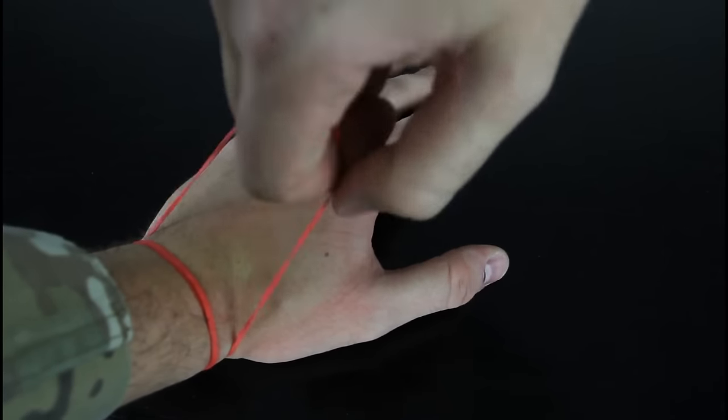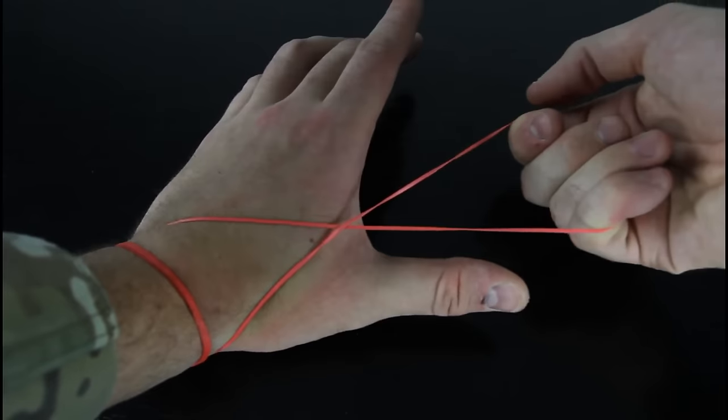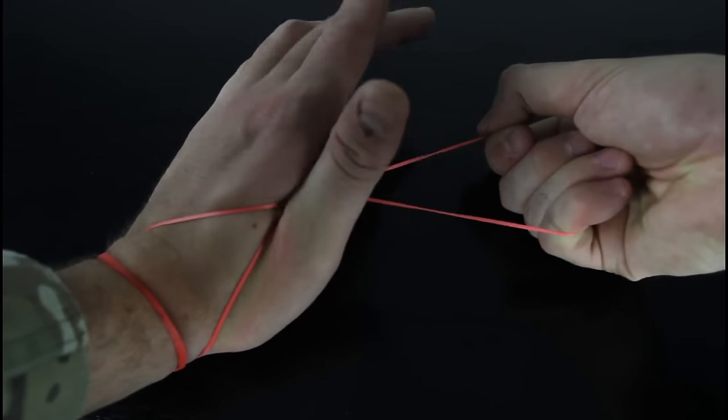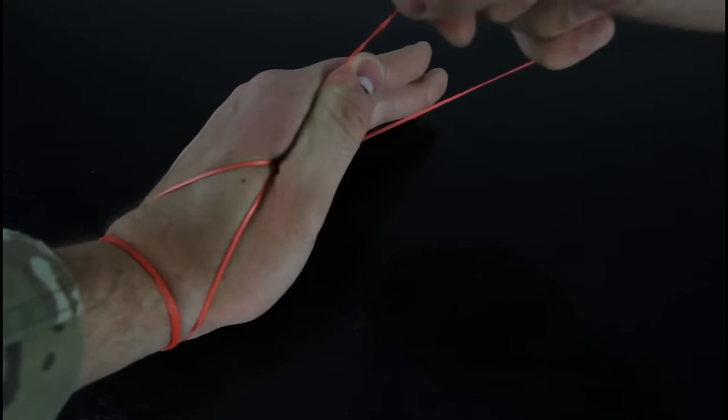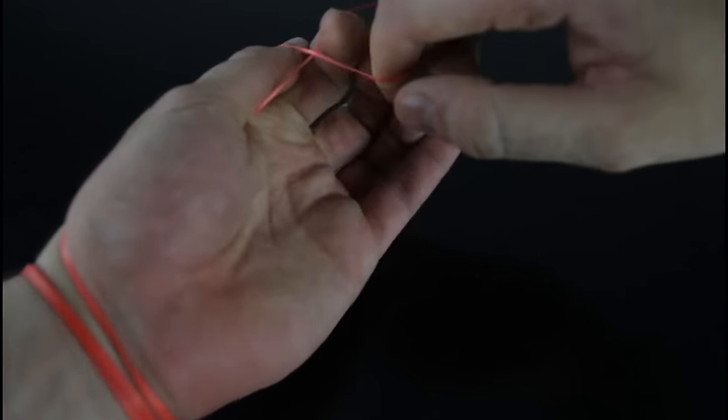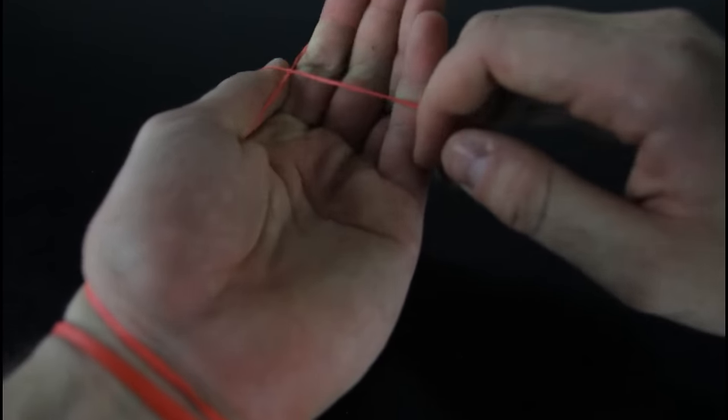You grab your rubber band right here, twist it one time. You see my hand is upside down now. Lock it here, go over your finger, and you see how I twist it again. Put my fingers in there.